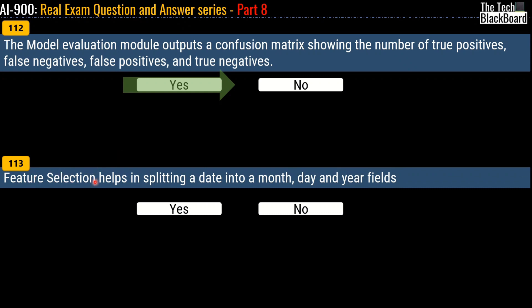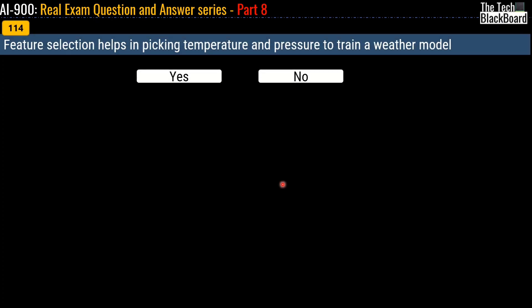Question 113: Feature selection helps in splitting a date into month, day, and year fields — the correct answer is No. Question 114: Feature selection helps in picking temperature and pressure to train a weather model — the correct answer is Yes.